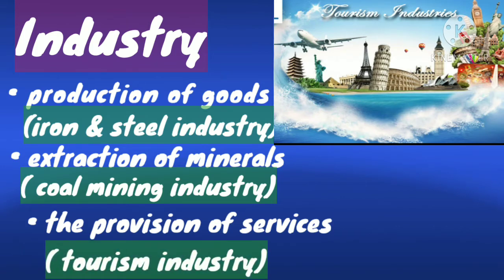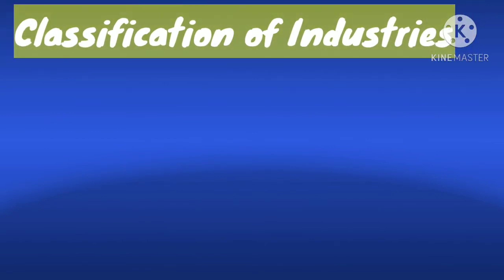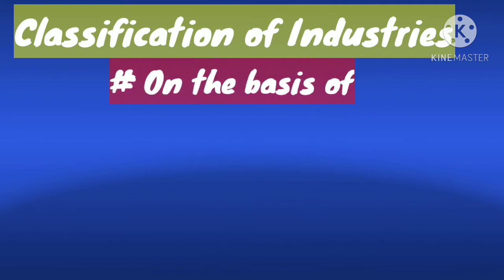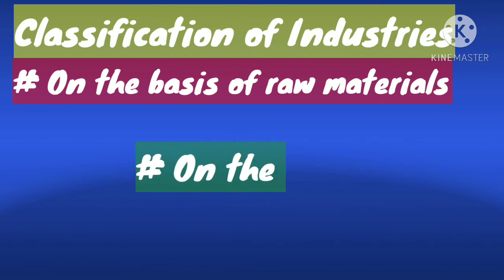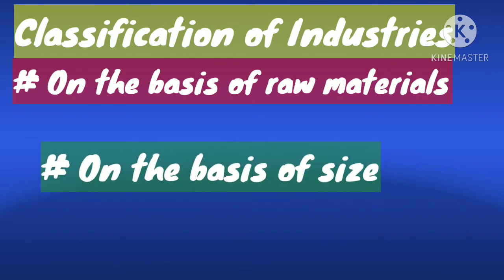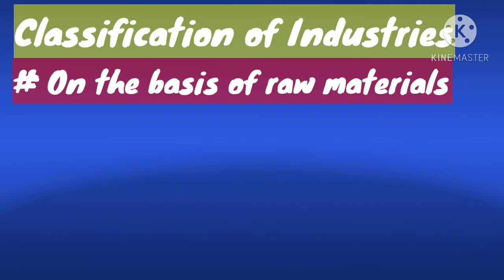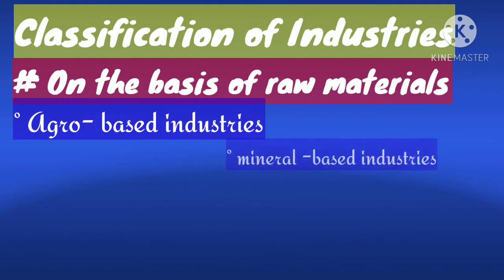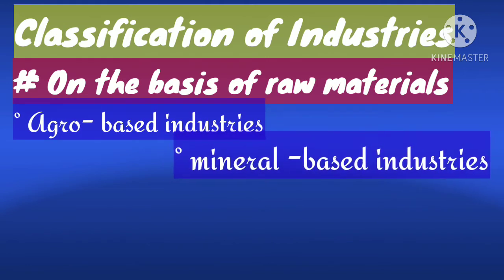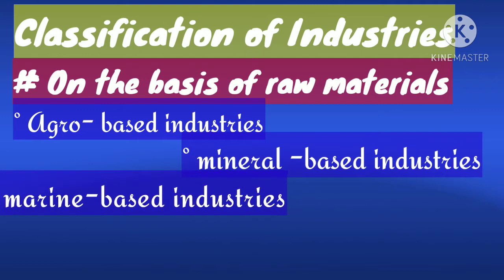Our next topic is classification of industries. Industries are classified on the basis of: number one, raw materials used; number two, size; and number three, ownership. On the basis of type of raw materials, industries are categorized into five groups: agro-based, mineral-based, marine-based, forest-based, and pastoral-based industries.